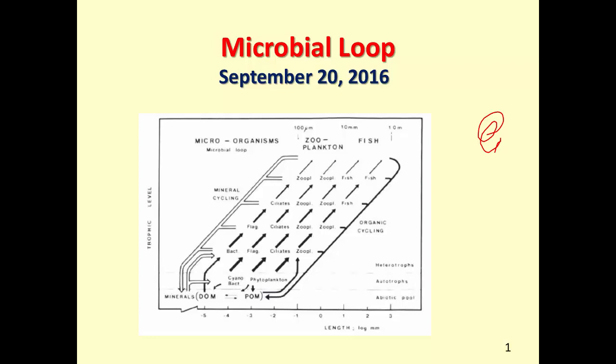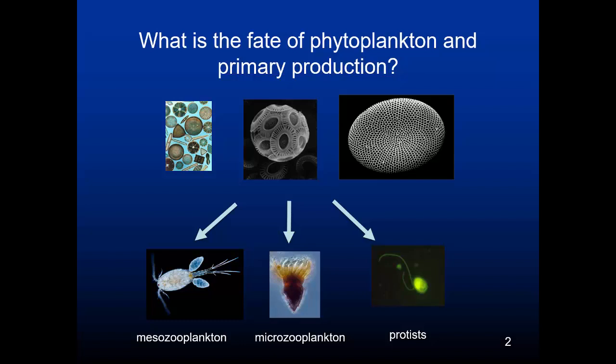Today we're going to be adding some more organisms to the oceans — in fact the most numerous type of organism we see in the biosphere. Before we do that, let's briefly review what happens to phytoplankton in primary production. We talked about many fates: they can be lysed by viruses, they can sink out of the water column, but a very important fate is to be eaten by a large range of organisms.